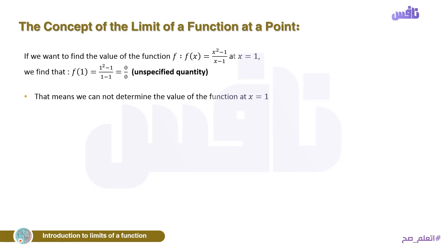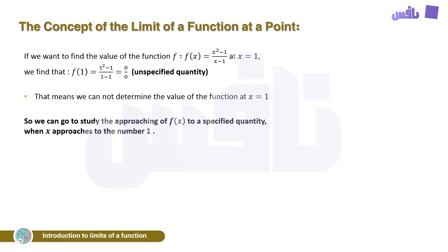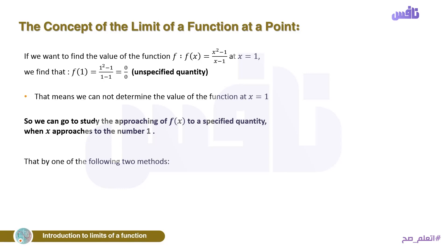We cannot determine the value of the function at x = 1. If we put any other number for x, there is no problem — the problem is specifically at x = 1. So we study the approaching of f(x) to a value when x approaches the number 1. We try to change this from an indeterminate form and find the limit value using two methods.